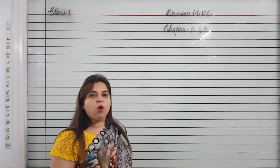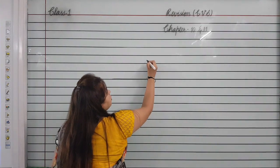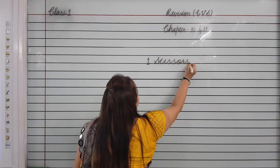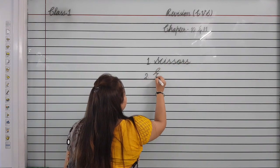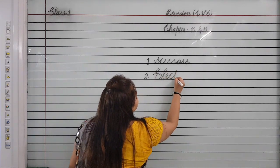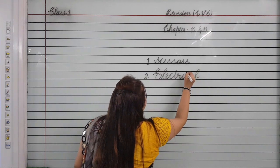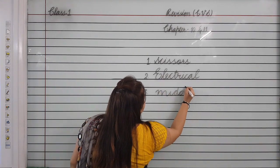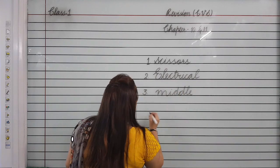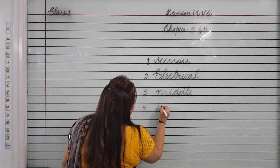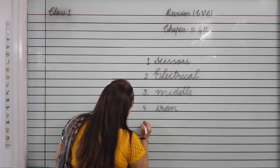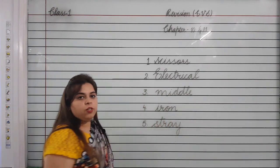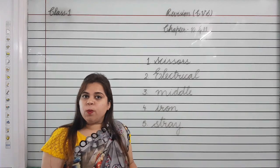Now we will revise hard words of this chapter. First is scissors: S-C-I-S-S-O-R-S. Second is electrical: E-L-E-C-T-R-I-C-A-L. Third is middle: M-I-D-D-L-E. Fourth is iron: I-R-O-N. Fifth is stray: S-T-R-A-Y. I hope you have revised these words with me.